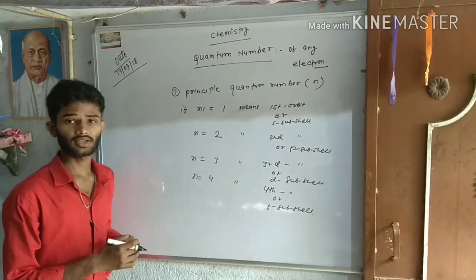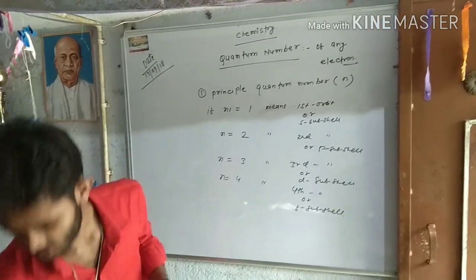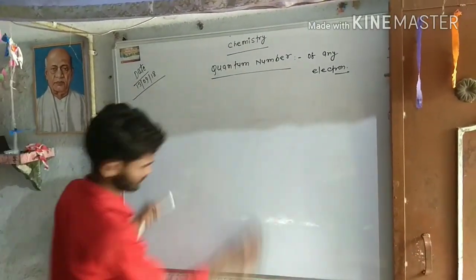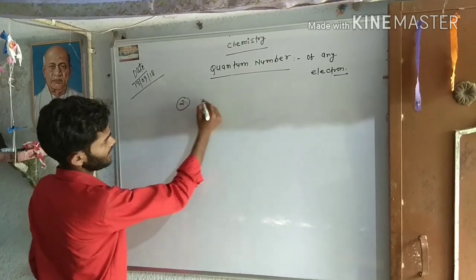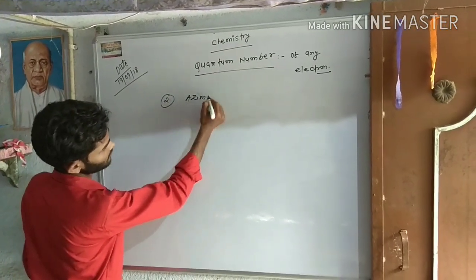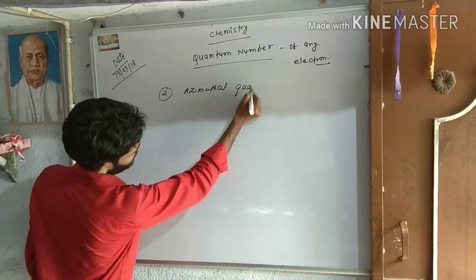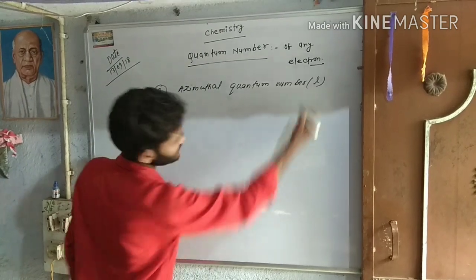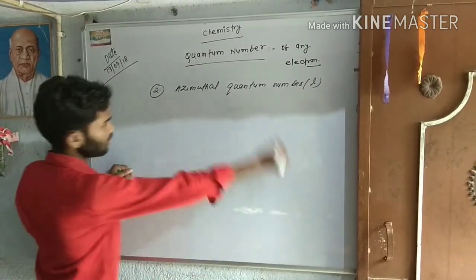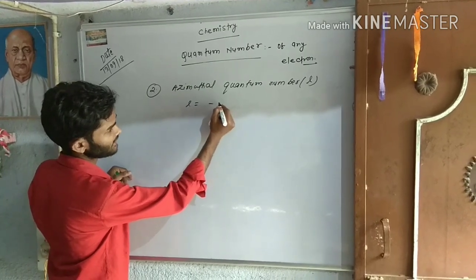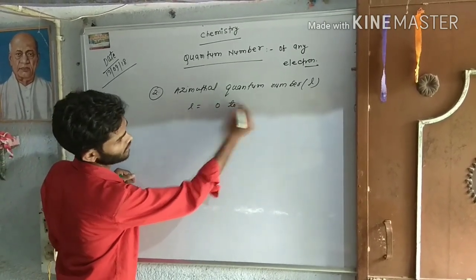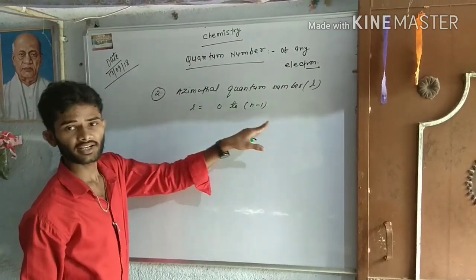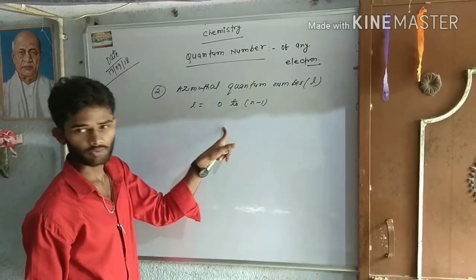अब चलेंगे second quantum number के बारे। Second quantum number का नाम है azimuthal quantum number, जिसको denote करते हैं small l से। और इसका एक formula होता है: l = 0 to n−1। यानि l बराबर 0 से n−1 तक होता है।